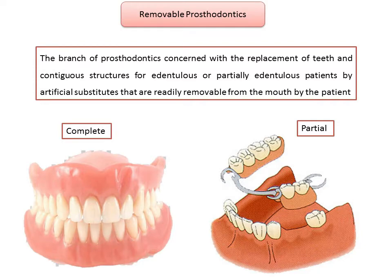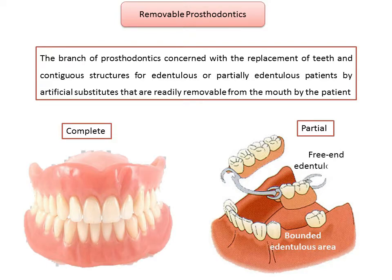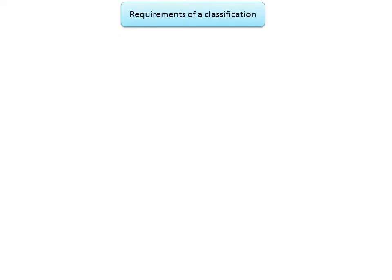An RPD may be extracoronal or intracoronal depending on the type of retention used to keep it in the mouth. The edentulous area can be either a bounded edentulous area, which has an abutment tooth on each end, or a free-end edentulous area, also termed a distal extension edentulous area, which has an abutment tooth on one side only.